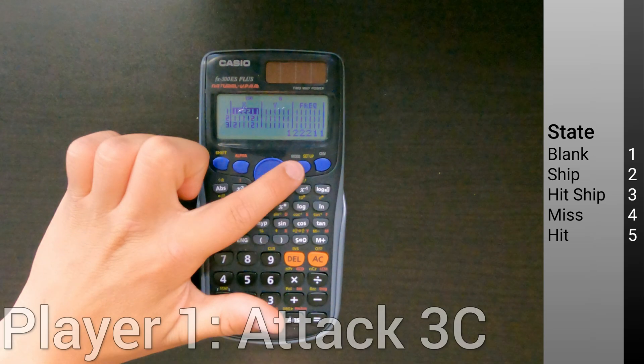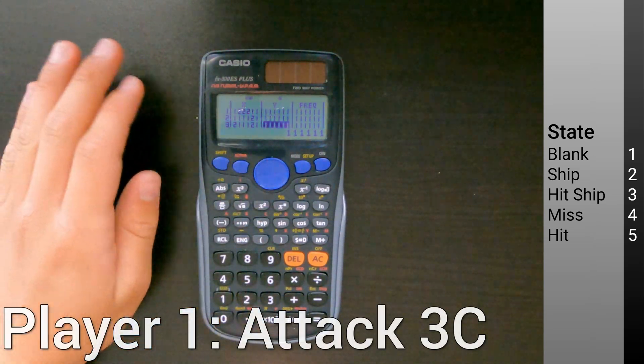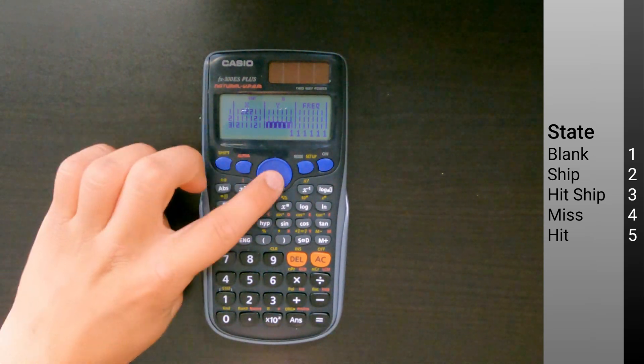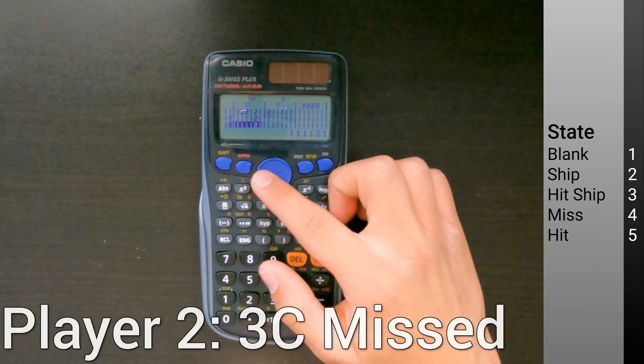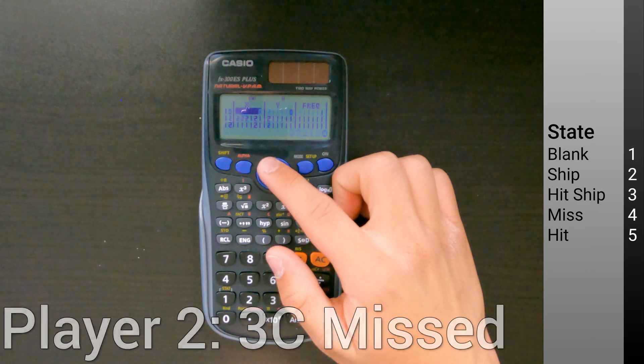On your turn, call out the coordinates of where you want to attack and scroll to rows seven through ten so your opponent won't see your board. Then your opponent will pick up the calculator and scroll to their side to check if it was a hit or miss.